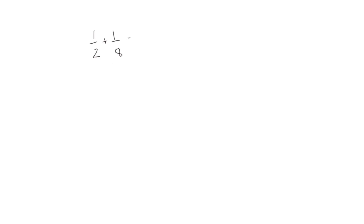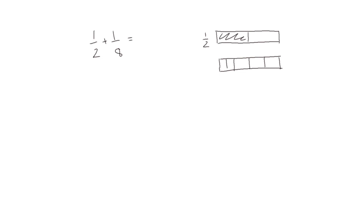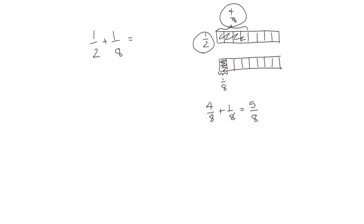Let's look at 1 half plus 1 eighth. Again, let's draw a tape diagram to show our first fraction, which is 1 half, and the second fraction, 1 eighth. We can decompose the larger units into the smaller by decomposing 1 half into eighths. We now have 4 eighths being equivalent to 1 half, and we have the 1 eighth we started with. So when we add 4 eighths plus 1 eighth, we get 5 eighths. Since 1 half and 4 eighths are equivalent, 1 half plus 1 eighth is 5 eighths.